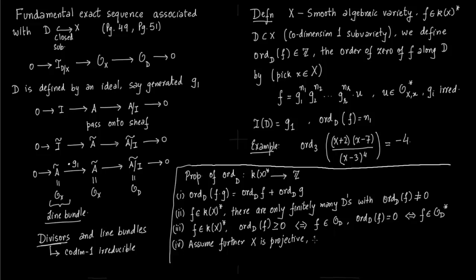If you assume further that X is projective and let f be an element of K(X)*, then the following are equivalent: (a) order of f is greater than or equal to 0 for all D; (b) order of f equals 0 for all D. If it's greater than or equal to 0 for all D, that essentially means it is precisely 0; and third, it is precisely 0 because it is a unit.